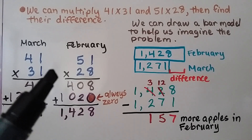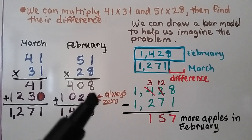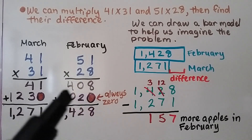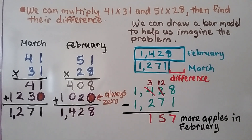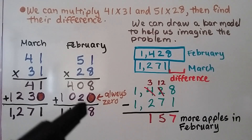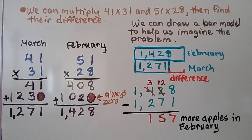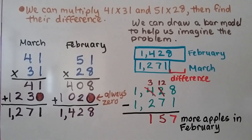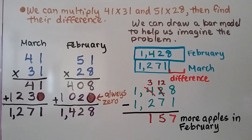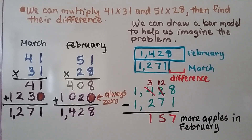Now we multiply 51 times 28 for February. We have 8 times 1, which is 8. Then 8 times 5 tens, which is 40 tens — that's 408. Now we do 2 tens times 1, which is 2 tens, and 2 tens times 5 tens, which is 10 tens. We add our partial products and get 1,428. We draw a bar model — he sold 1,428 in February and 1,271 in March. We need to find the difference, so we subtract: 1,428 minus 1,271, and find there were 157 more apples sold in February.